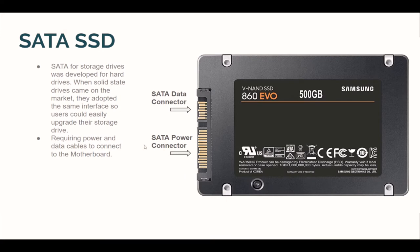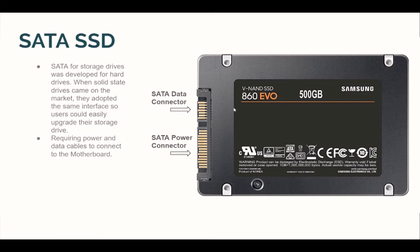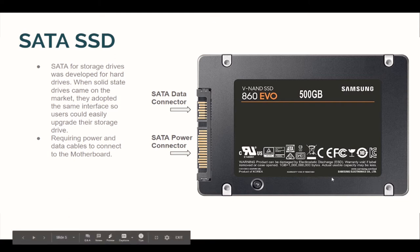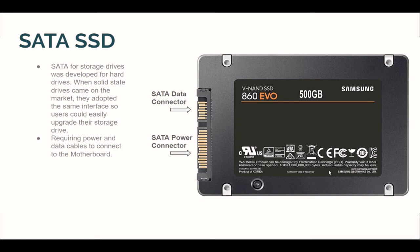SATA SSD: SATA for storage drives was developed for hard drives. When the solid state drive came onto the market, they adopted the same interface so users could easily upgrade their storage drive. Whenever someone asks how to improve the speed of their computer, swapping out a hard disk drive and putting in a solid state drive is a good move. You can do that by using a SATA solid state drive — not an M.2, because that requires some adaptation to your system. A hard disk drive can be directly swapped with a SATA SSD.